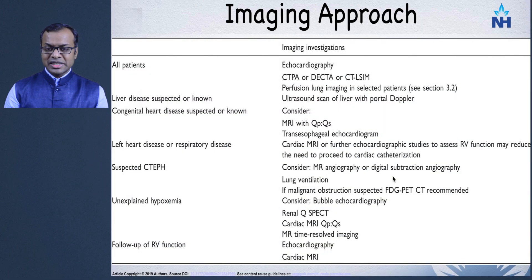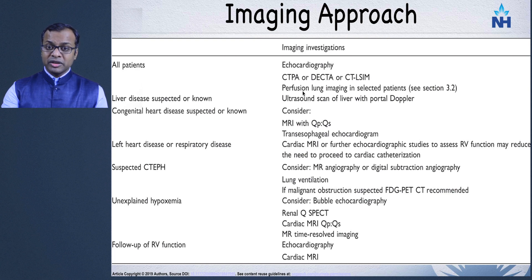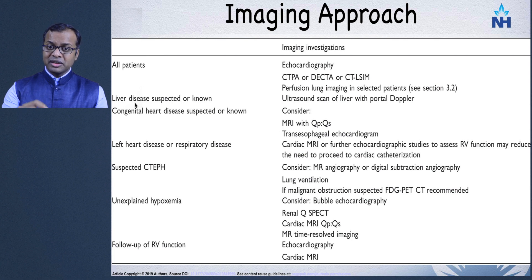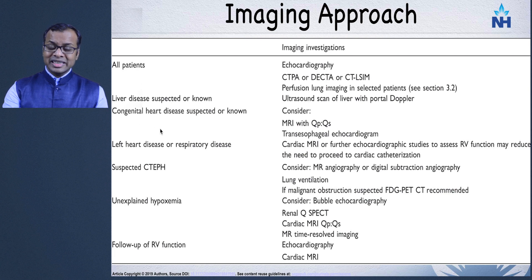Recommendations suggest all patients should undergo echocardiography, CT pulmonary angiography or dual-energy CT angiography with perfusion, and lung scintigraphation studies. If liver disease is suspected, ultrasound of the liver with Doppler is very important. For congenital heart disease or left heart disease, both CT and MRI are extremely useful.